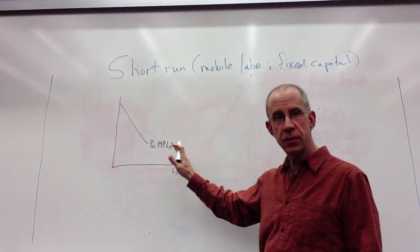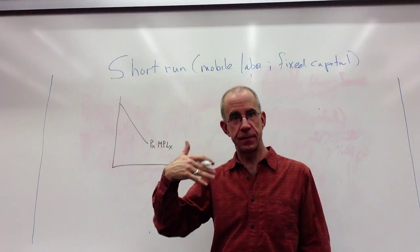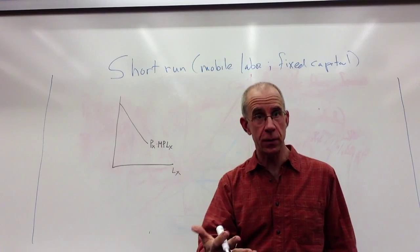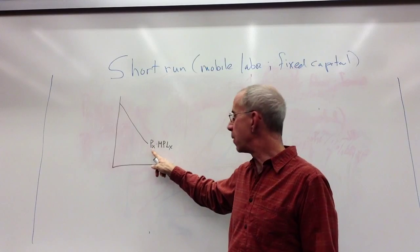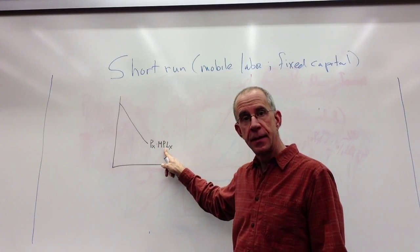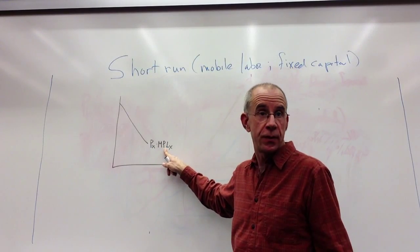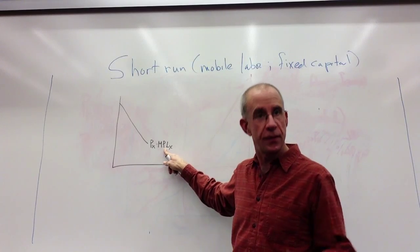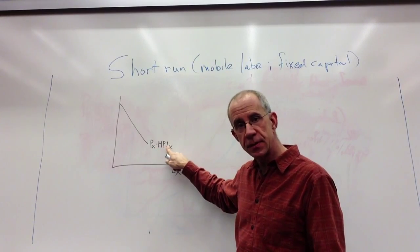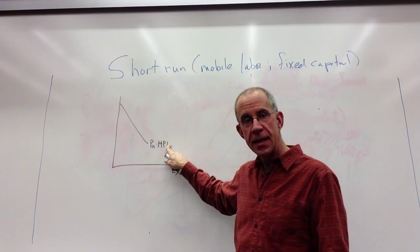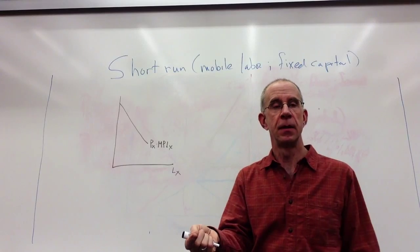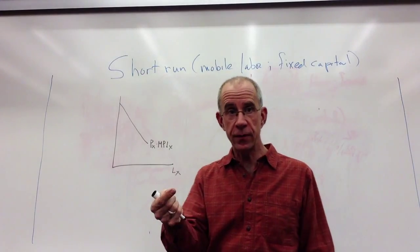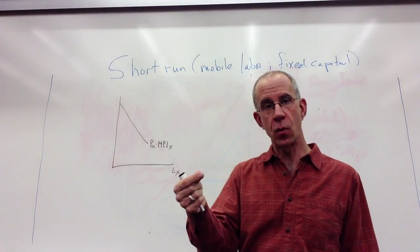Now the standard measure of the marginal benefit for a firm of hiring another worker is the price of the good multiplied times the number of units of the product that can be produced if you add one more worker. So price times the MPL is the marginal benefit, the marginal revenue product of hiring one more worker.